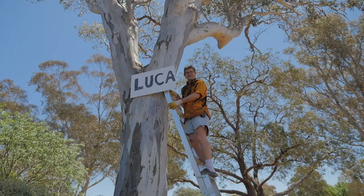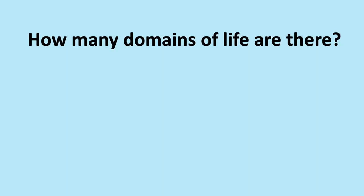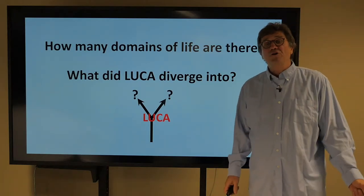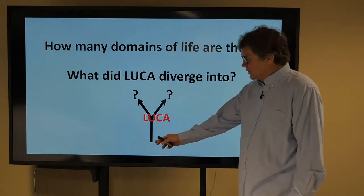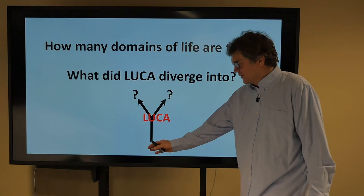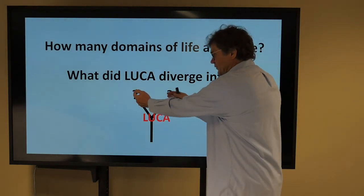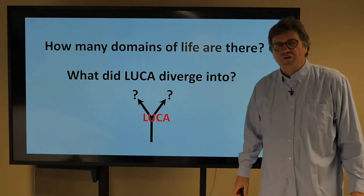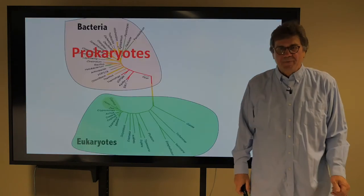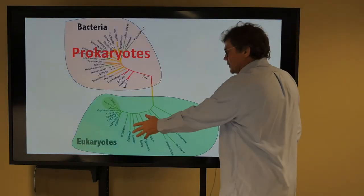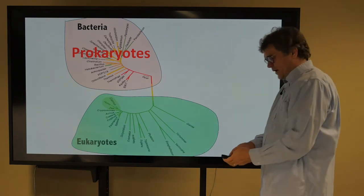Two domains. How many domains of life are there? What did LUCA diverge into? Here's LUCA, the origin of life, and then what did it diverge into? What was the first divergence in the tree of life? Well, here we have prokaryotes and here we have eukaryotes.